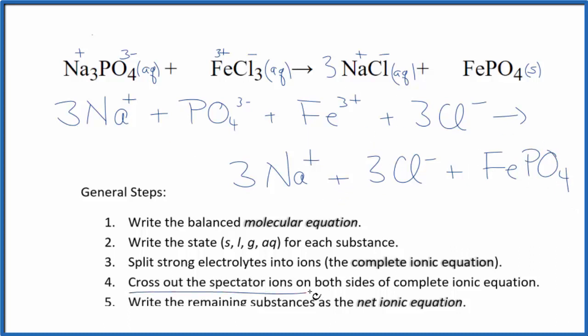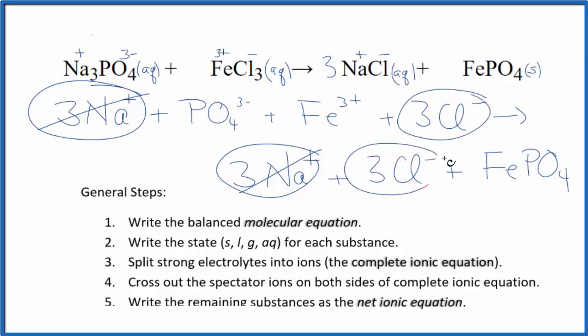Now we can cross out those spectator ions, they're on both sides. Let's see, reactants and products. 3 sodium ions, and in the products, 3 sodium ions. 3 chloride ions, and again in the products, we have 3 of those. They're gone. And what's left? That's the net ionic equation for sodium phosphate plus iron(III) chloride.